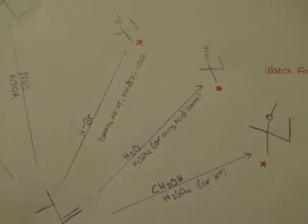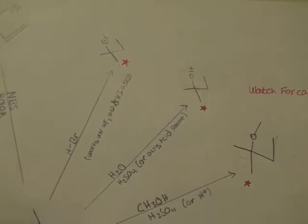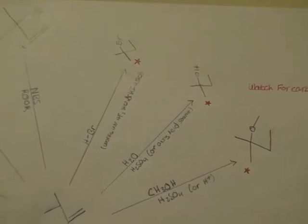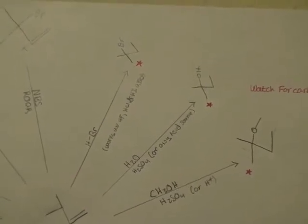All of these reactions start with the same starting material but are reacted with different reagents to give different products. The first one is HBr which adds bromine to the double bond. That will also work with HF, HCl, and HI.